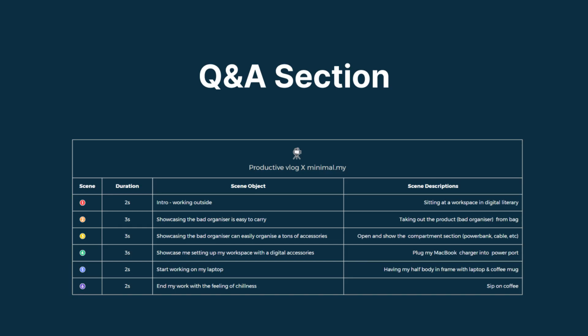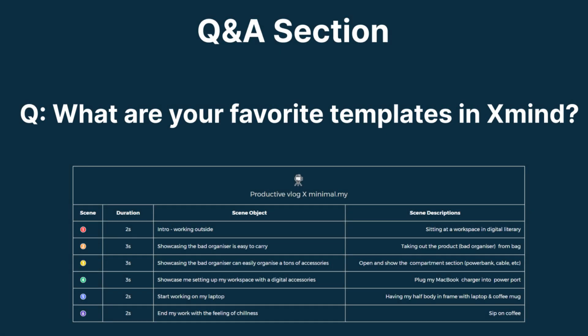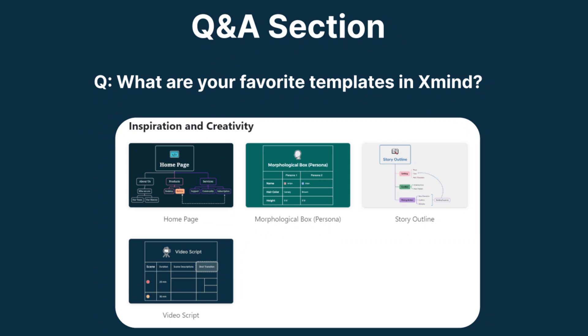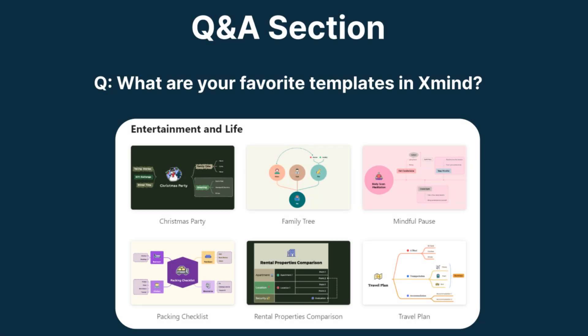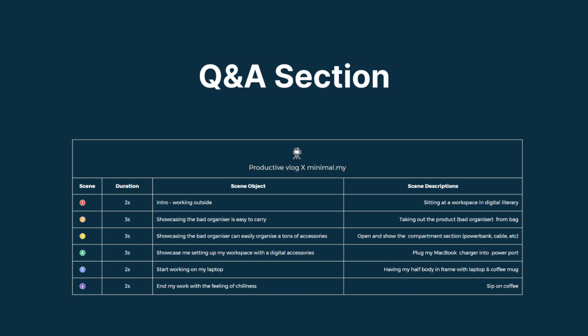We can have some Q&A now. My favorite template category in XMind is Inspiration and Creativity. For longer videos I need a storyline, so I can lay out all my ideas before going deep into a video script. I also like the travel list template because I travel a lot and it helps me organize everything. If there are no more questions, we can end the session. Thank you all for joining!